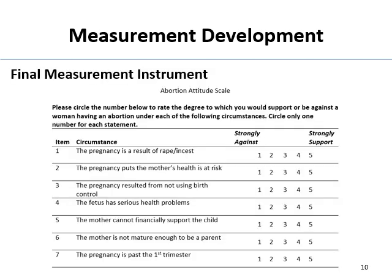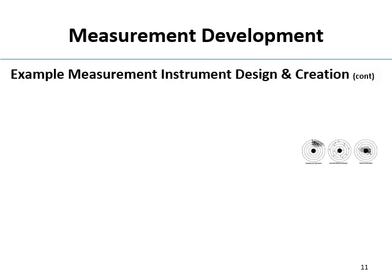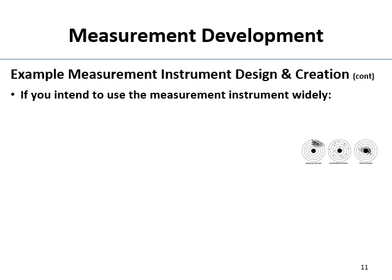My final measurement instrument was called the Abortion Attitude Scale. The instructions read: 'Please circle the number below to rate the degree to which you would support or be against a woman having an abortion under each of the following circumstances. Circle only one number for each statement.' Looking back, I'd cut a lot of the wording — it's too wordy. I also notice that one item wraps to a second line, which isn't ideal formatting. But this was the scale I used for my little correlational study as an undergrad.